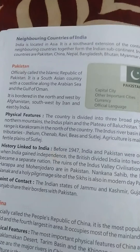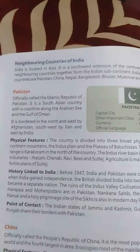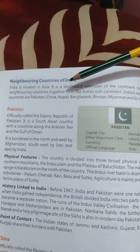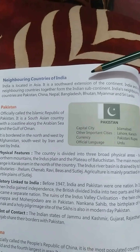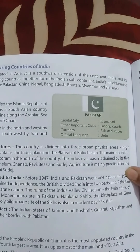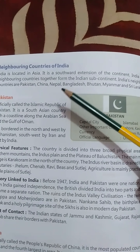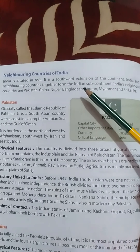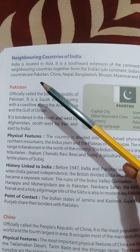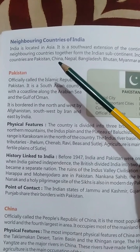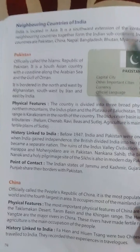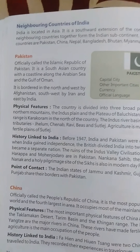Let's turn the page — Neighboring countries of India. India is located in Asia. It is a southward extension of the continent. India and its neighboring countries together form the Indian subcontinent — so this you have to remember. India's neighboring countries are Pakistan, China, Nepal, Bangladesh, Bhutan, Myanmar, and Sri Lanka — again and again they have written so that we can keep it in our mind.